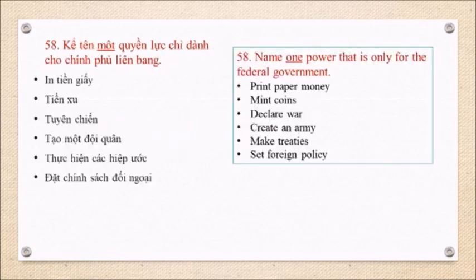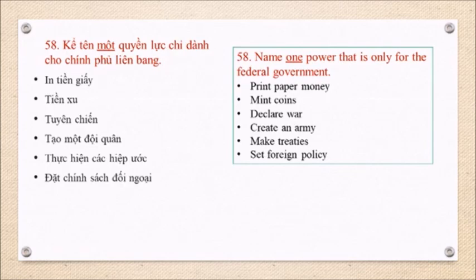Question 58: Name one power that is only for the federal government. Print paper money. Mint coins. Declare war. Create an army. Make treaties. Set foreign policy.